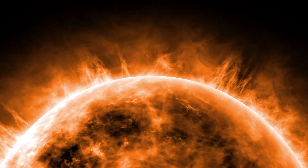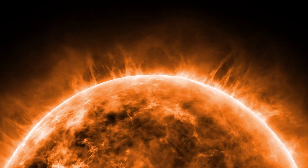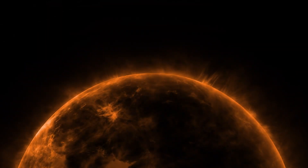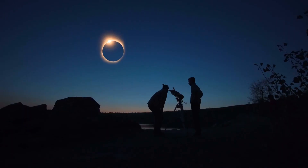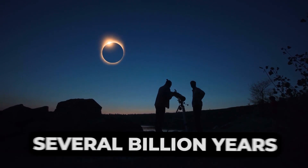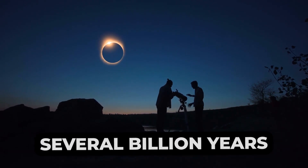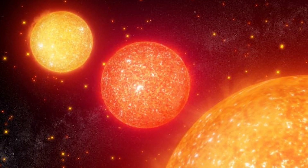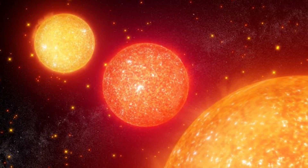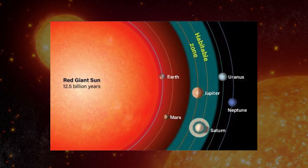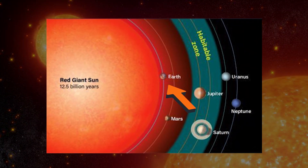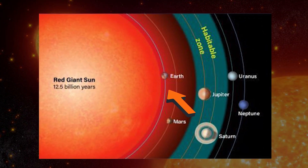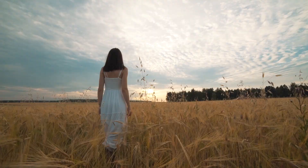The Sun is in the middle of its life cycle, and it will eventually run out of fuel and die. Scientists believe that this process will take several billion years, but eventually the Sun will expand into a red giant and consume the inner planets, including Earth, before collapsing into a white dwarf.